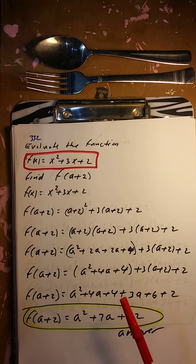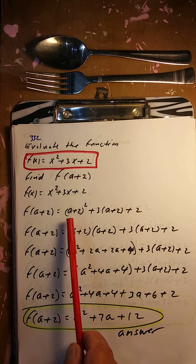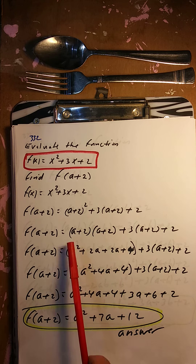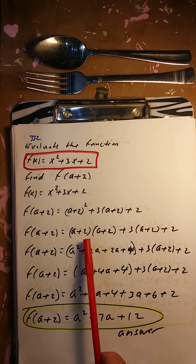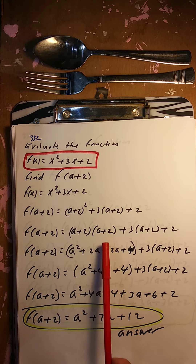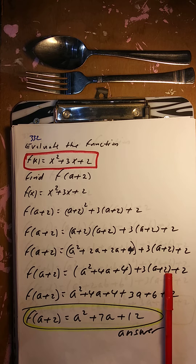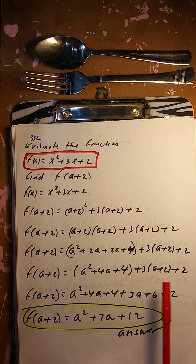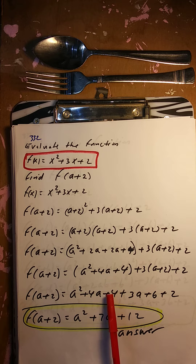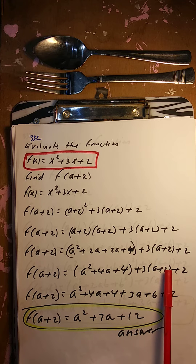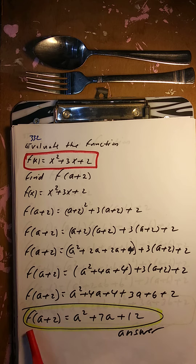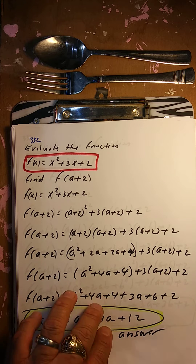Evaluate f of a plus 2 — a little bit harder. Put a plus 2 for all the x's. So a plus 2 squared means a plus 2 times a plus 2. a times a is a squared, a times 2 is 2a, 2 times a is 2a, 2 times 2 is 4. Combine: a squared plus 4a plus 4. Then plus 3 times a plus 2, which is 3a plus 6, and plus 2. Combine like terms: a squared, 4a plus 3a is 7a, and 4 plus 6 plus 2 is 12. So f of a plus 2 is a squared plus 7a plus 12.